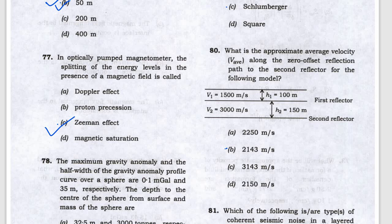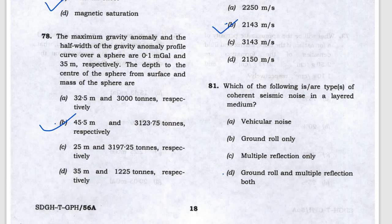Question 80: the average velocity for zero offset reflection depth, so answer is B. Next, coherent means ground roll and multiple reflections both, so answer is D.